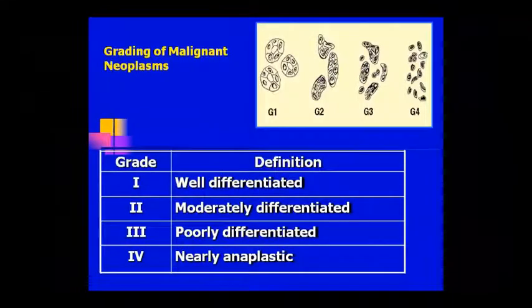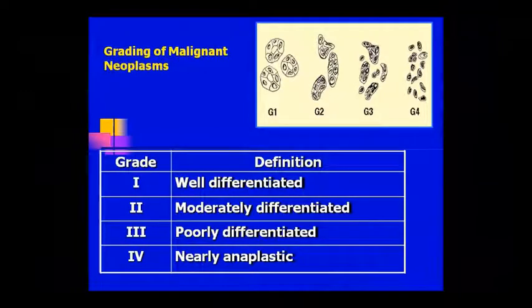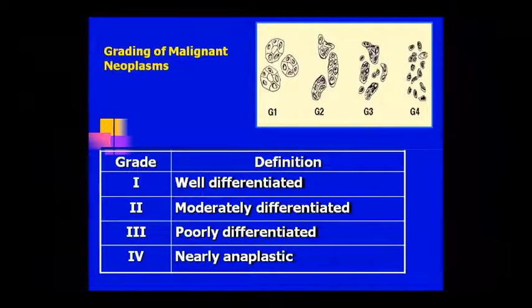Now, how can you diagnose cancer? After grading — we grade our cancer. Grade 1 means well-differentiated cancer. Grade 2 is moderately differentiated. Grade 3 is poorly differentiated. Grade 4 is anaplastic condition — an immature group of mass cells, or primitive stage cells showing a mass.